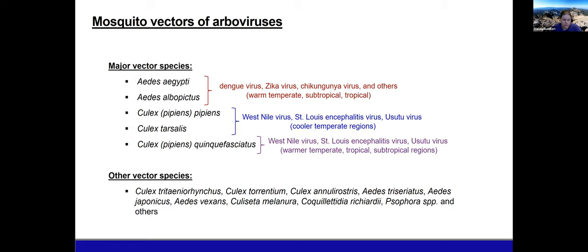The major vector species are Aedes aegypti and Aedes albopictus for tropical and subtropical viruses such as dengue, Zika, chikungunya, and many others. In more temperate regions, we have Culex pipiens and Culex tarsalis mosquitoes, which transmit West Nile virus and LaCrosse encephalitis virus, and in Europe also Usutu virus. Culex pipiens quinquefasciatus — the southern house mosquito — transmits the same viruses but in warmer temperate, tropical, and subtropical regions.